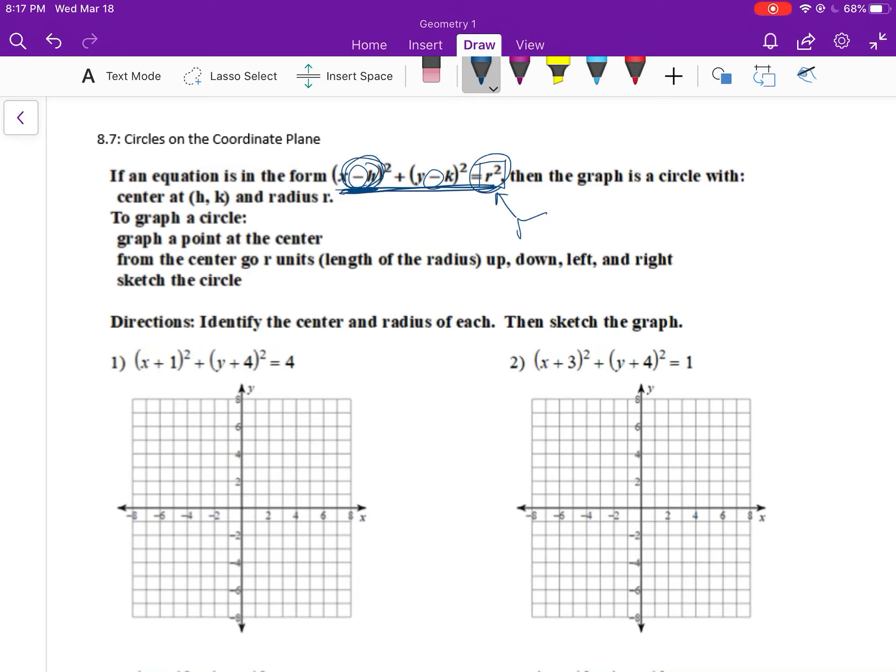To graph a circle, graph a point at the center. From the center go r units, the length of the radius, up, down, left, and right from the center. And then sketch the circle. I think just doing them will help you here.